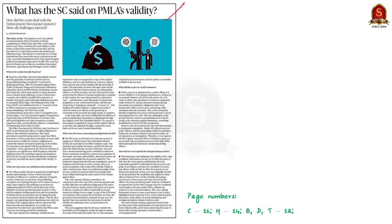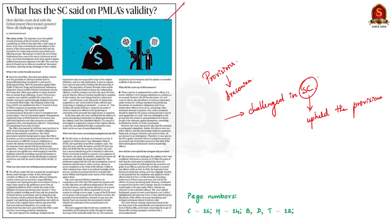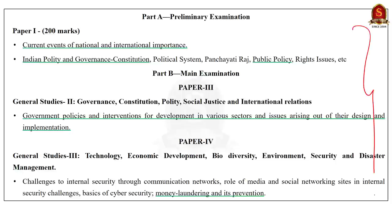It deals with the recent judgment of Supreme Court regarding the prevention of money laundering act. Many provisions of the act were termed draconian by the petitioners. The provisions and their interpretations were challenged, but now the Supreme Court has upheld the validity of these sections and the act as whole. It has also upheld the provisions that give the enforcement directorate enormous powers. The syllabus relevant to the article is highlighted here for your reference.